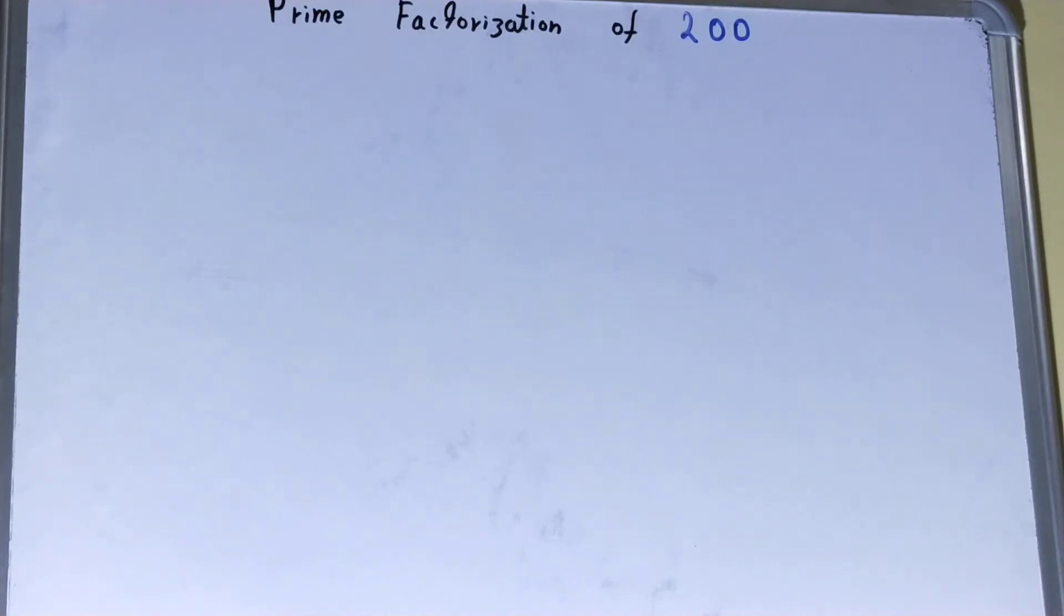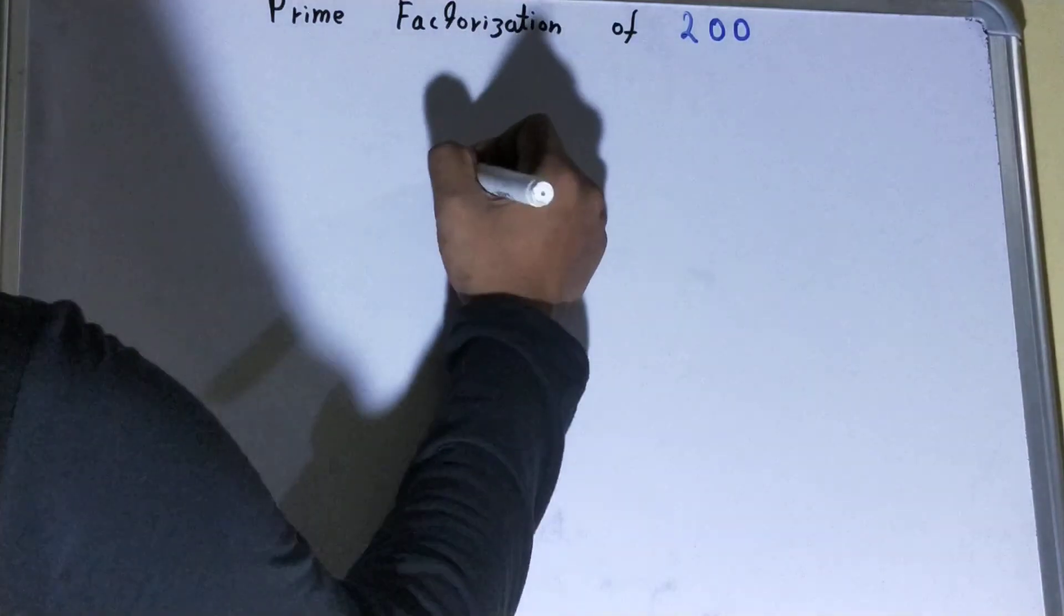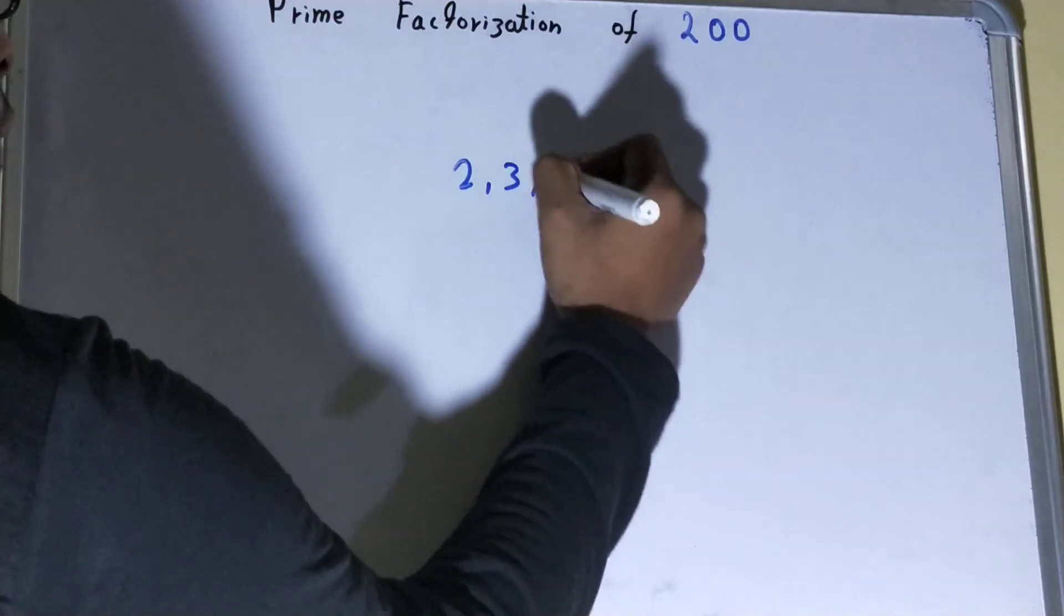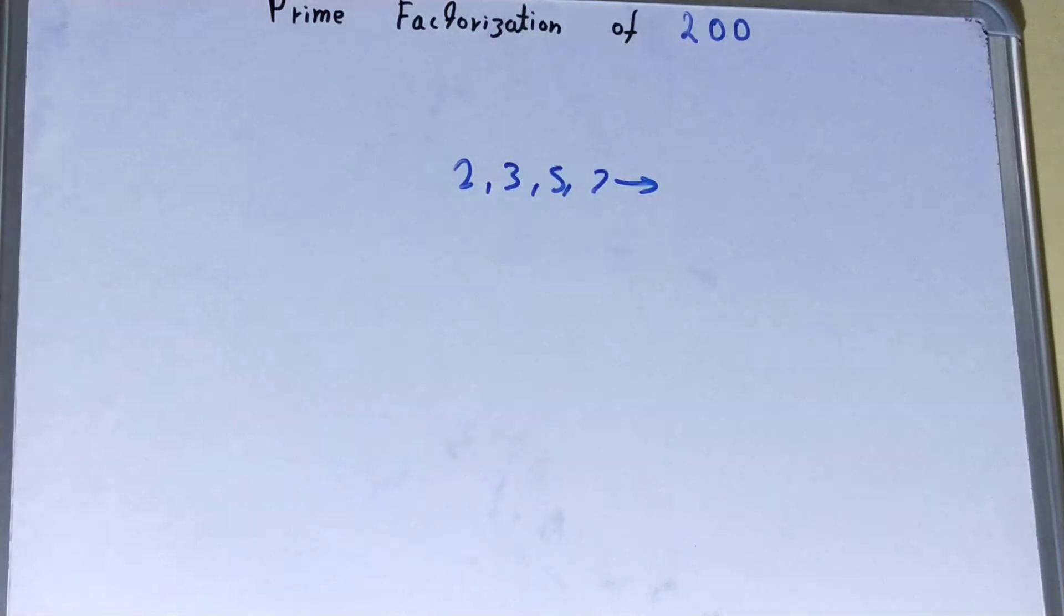So for this you must be clear with the concept of prime numbers, that is, prime numbers are numbers which are divisible by themselves or 1, like 2, 3, 5, 7, and it goes on increasing.